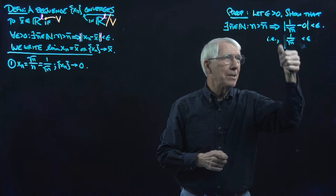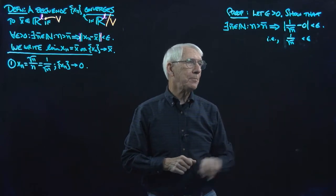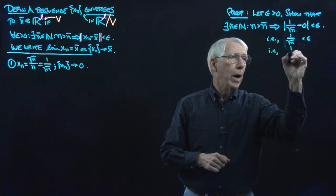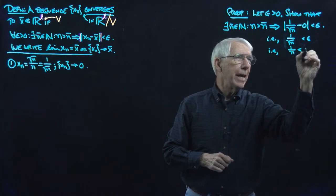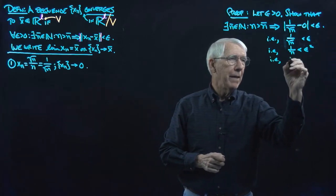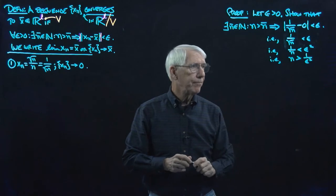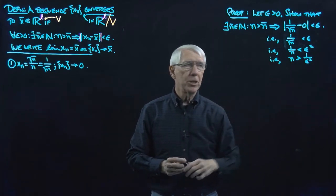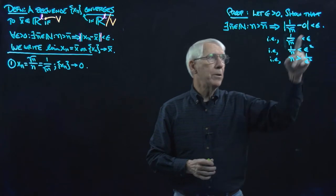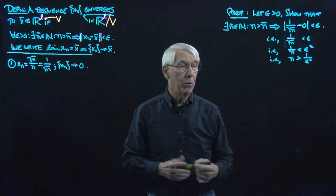And of course this is always positive. So that's the same as 1 over the square root of n being less than epsilon. That's the same as saying 1 over n is less than epsilon squared — by squaring both sides. And that's the same as saying n is greater than 1 over epsilon squared. Each of these is equivalent; I put IE to emphasize I'm not just saying implies, but that these are truly equivalent — I can go the other way too.